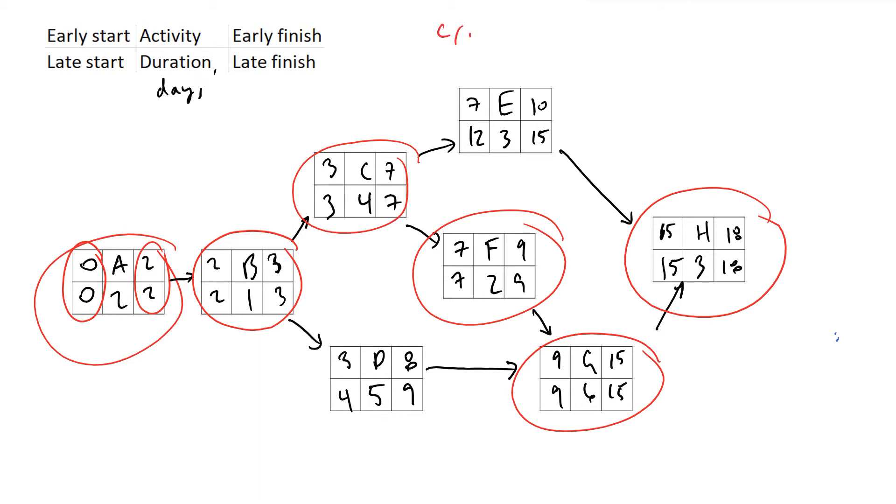So what this says is that our critical path is the following: A, B, C, F, G, and H.